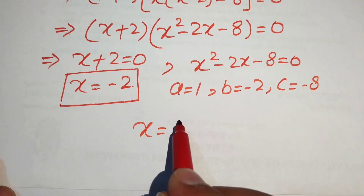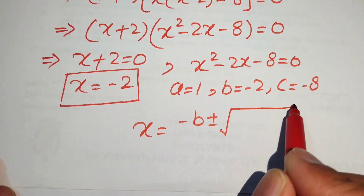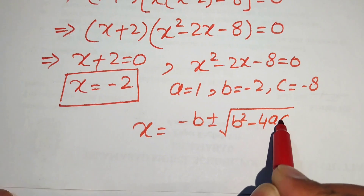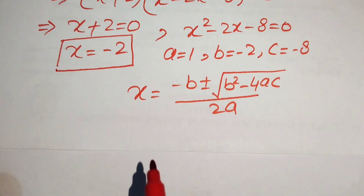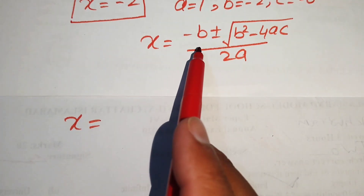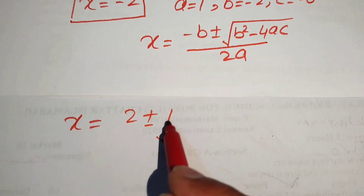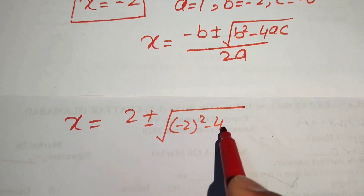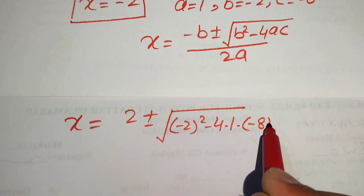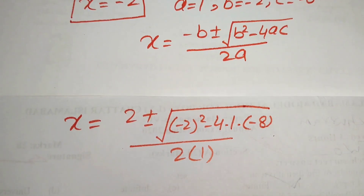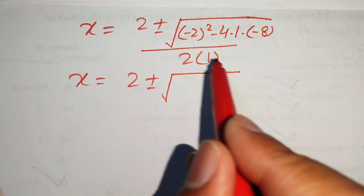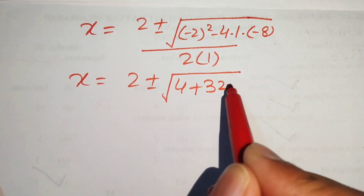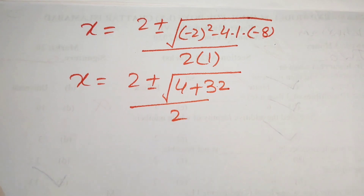The quadratic formula is x equals (minus b plus or minus square root of b squared minus 4ac) divided by 2a. Substituting the values: x equals (2 plus or minus square root of 4 minus 4 times 1 times minus 8) divided by 2. Simplifying: x equals (2 plus or minus square root of 4 plus 32) divided by 2.